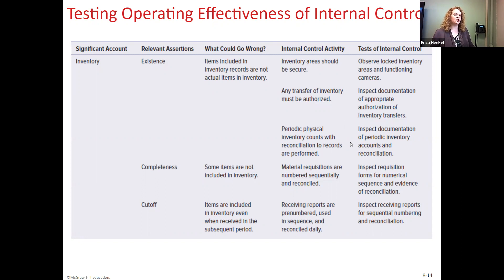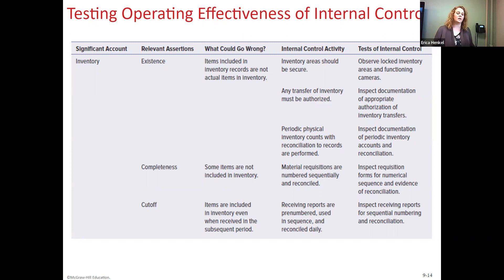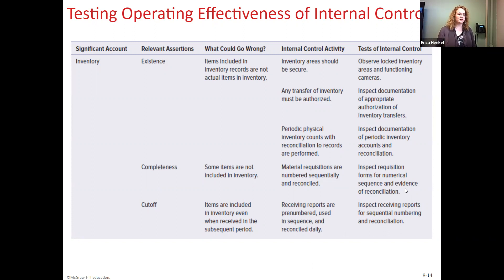You could follow something all the way through to do tests of internal controls. For periodic physical counts, check the documentation: who took the count, what were their qualifications, what degree of testing was performed, were there any discrepancies found. For completeness, the control activity is that material requisitions are numbered sequentially and reconciled. Whether electronic or paper, you can look for gaps in the sequence and see evidence that they have tracked and reconciled the numeric sequence. Same thing with receiving reports — they should be pre-numbered, used in sequence, and reconciled daily.